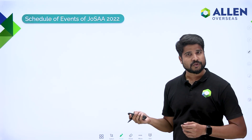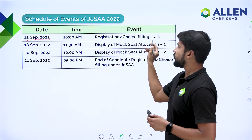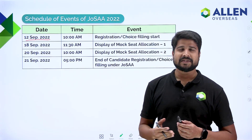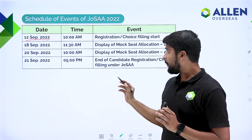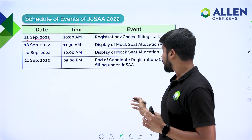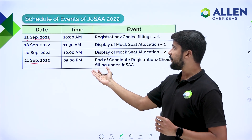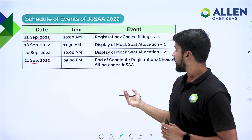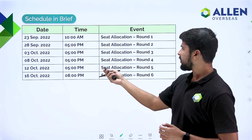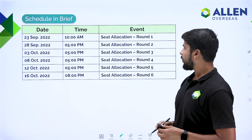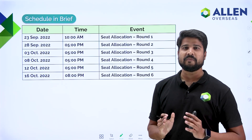We will now look at the schedule of events of JOSAA 2022. From 12th September, registration and choice filling portal will open. JEE Advanced result will be announced on 11th September, so you will have ample time to provide choices up to the deadline of 21st September. 18th and 20th September are dates for mock seat allocation one and two. In brief: Round 1 — 23rd September, Round 2 — 28th September, Round 3 — 3rd October, Round 4 — 8th October, Round 5 — 12th October, Round 6 — 16th October.